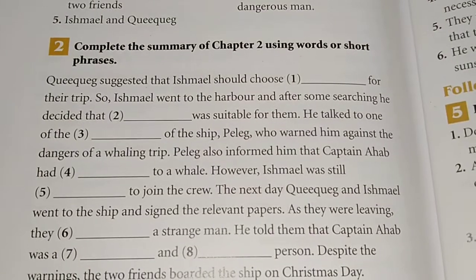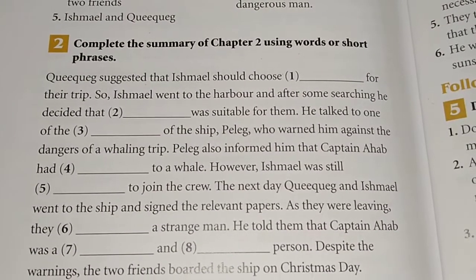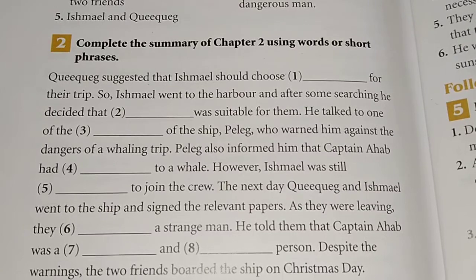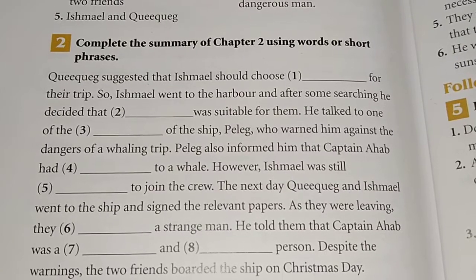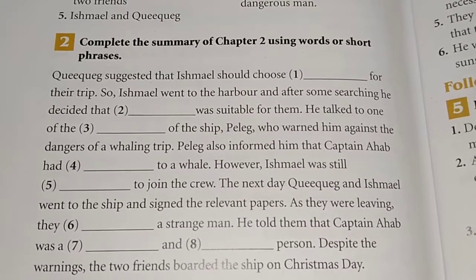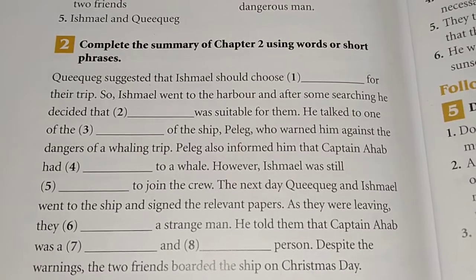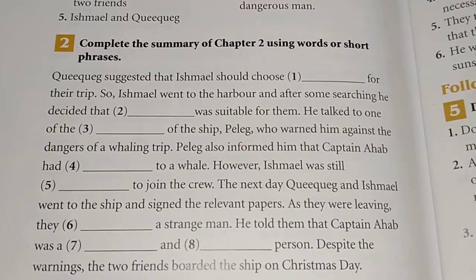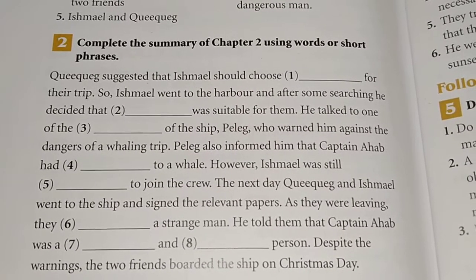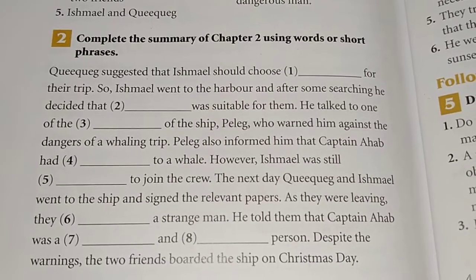The first blank: Queequeg suggested that Ishmael should choose a ship for the trip. The answer in the blank should be 'ship' or the name of the ship, Pequod. So Ishmael should choose the Pequod for the trip.